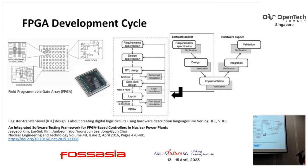To put things in context and refresh your mind, we saw the FPGA development cycle. A typical FPGA development consists of the software aspect and the hardware aspect — we are dealing with really competent electronic components. From the software aspect, we have requirement specification, and everywhere we have verification and checking if things are designed the way we want. Then you have design, implementation, integration, and validation.